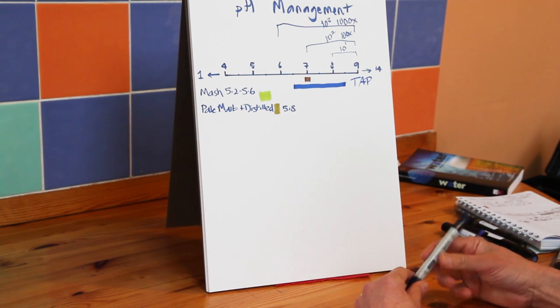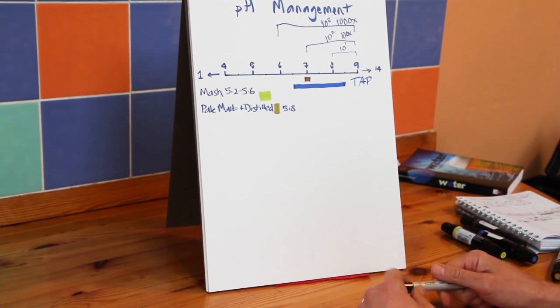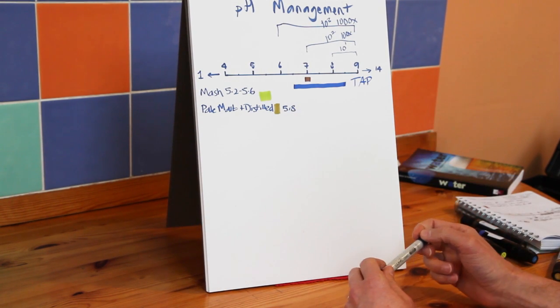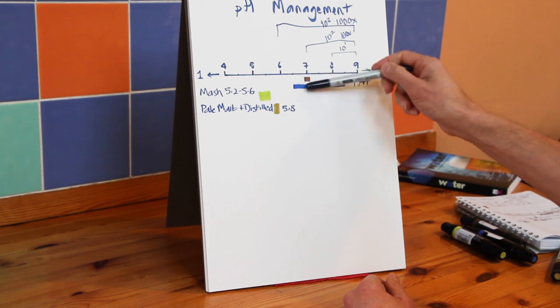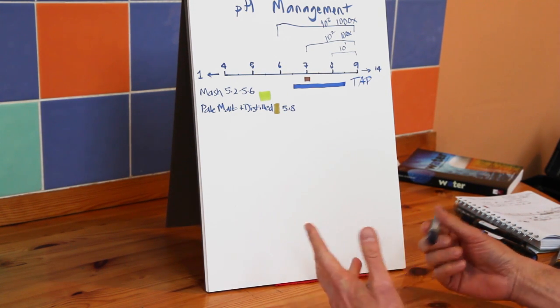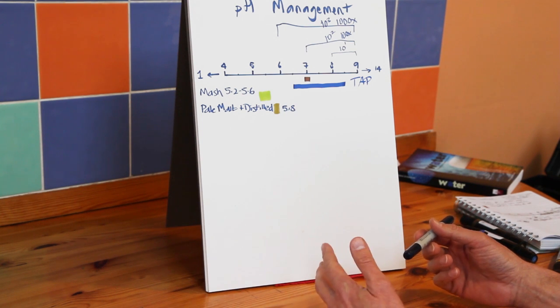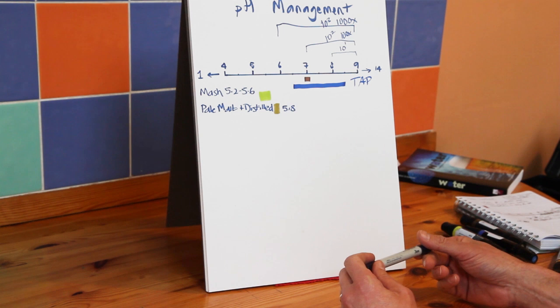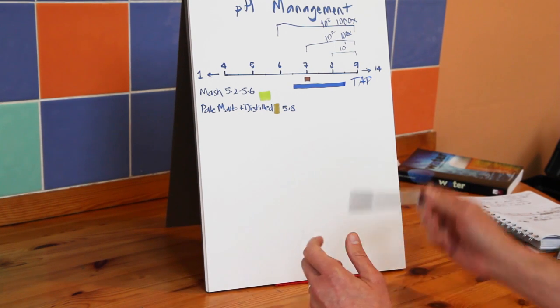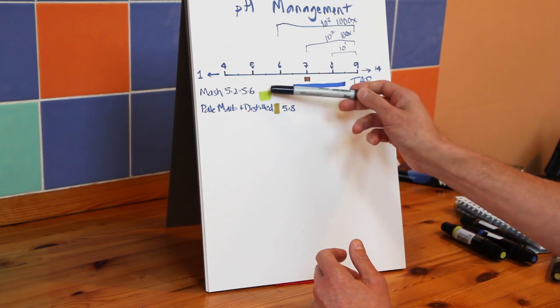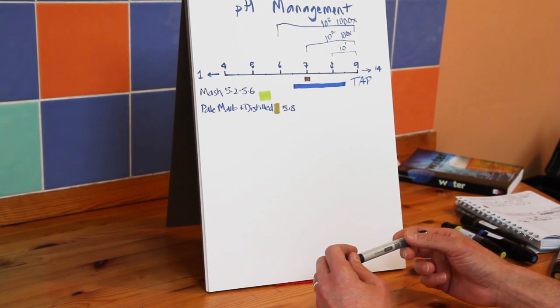OK, getting into the mash then. If you take pale malt and you mash it into distilled water, so there are no minerals or anything else in there to interfere with anything, it settles out at a pH of somewhere around 5.8. That I've marked on there, so you can see that given that that distilled water will have been pH 7 being distilled, the malt itself has shifted the pH down and acidified the mash. And the reason that happens is because the chemical reactions in the mash, kicked off by the content of the malt itself, particularly the phosphates, which move that pH down in the acidic direction. As you can see, it hasn't quite got into the ideal range that we want it to get into, but it started that journey on its own. But remember that this is distilled water that the pale malt has gone into.